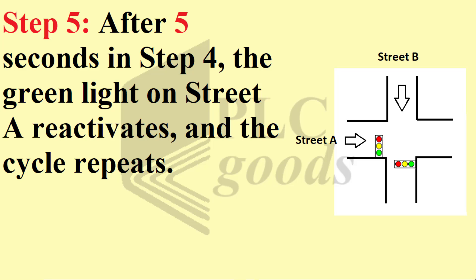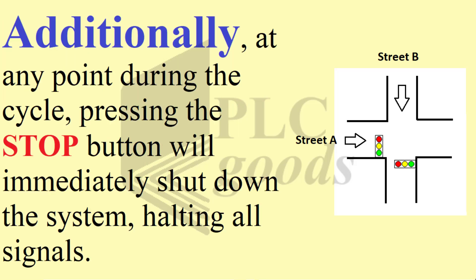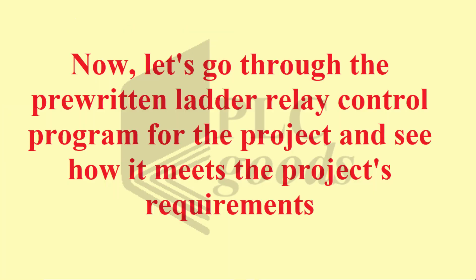Step five: after the five seconds in step four, the green light on Street A reactivates and the cycle repeats. Additionally, at any point during the cycle, pressing the stop button will immediately shut down the system, halting all signals. Now let's go through the pre-written ladder relay control program for the project and see how it meets the requirements.